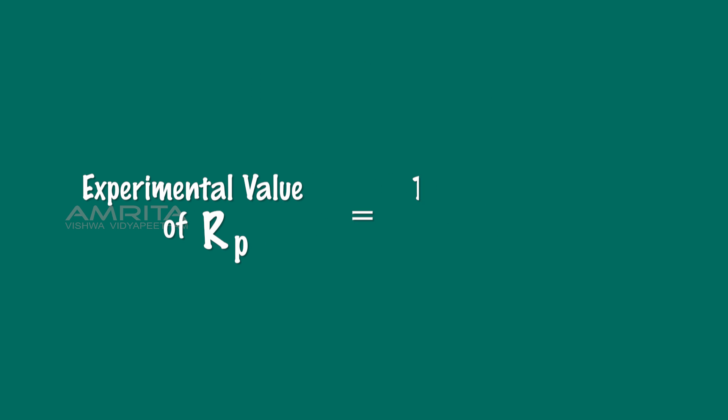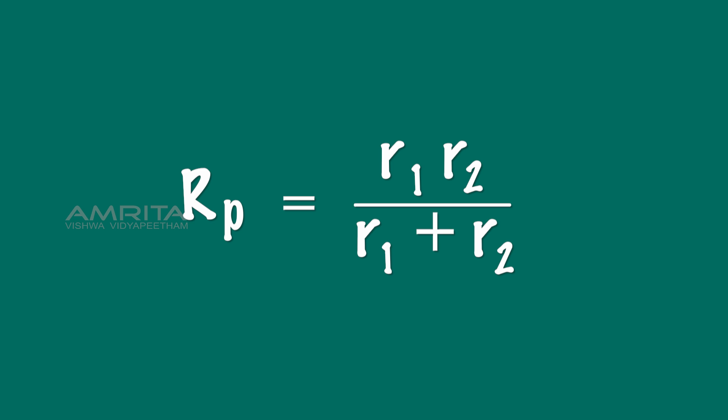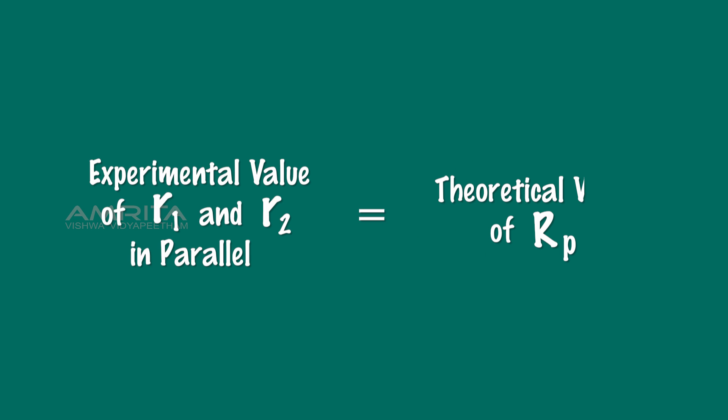Then to verify the laws of resistance connected in parallel, calculate the theoretical value of Rp using the equation Rp equals R1 times R2 divided by (R1 plus R2). If the experimental and theoretical values of Rp are the same, then the law of resistance in parallel is verified.